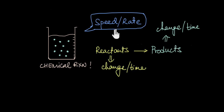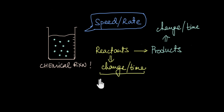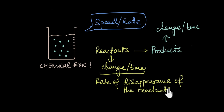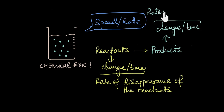So the speed of a chemical reaction can be thought of in terms of the change of the reactants per unit time, commonly referred to as the rate of disappearance of the reactants, or in terms of the change in the amount of products per unit time, which is referred to as the rate of appearance of the products.